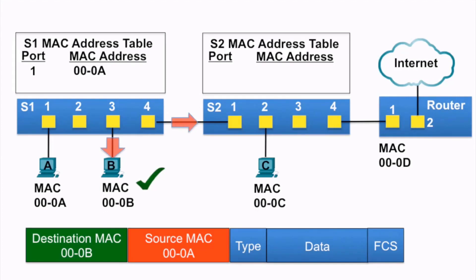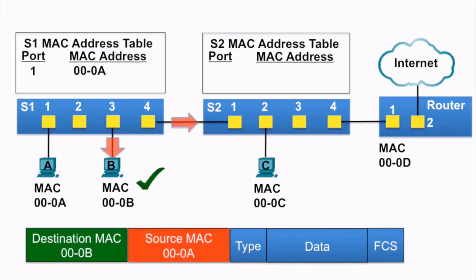The Ethernet frame continues to be forwarded to switch S2. Switch S2 examines the source MAC address of the frame, notices it is not in its MAC address table, so it adds the MAC address and the incoming port to its MAC address table.